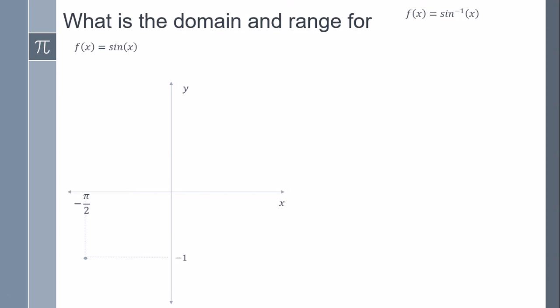So why do we limit from minus π over 2 to π over 2? Because if you figure out, the maximum of the function sine is going to be 1 and the minimum is going to be minus 1.